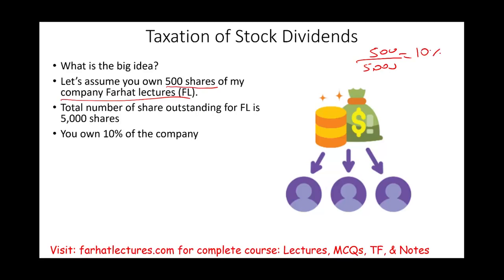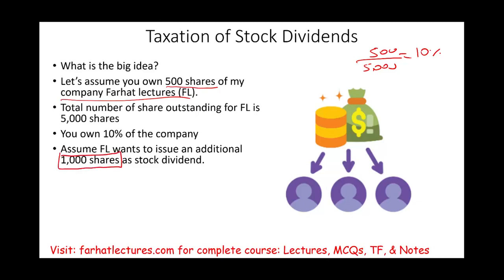As the owner of the company, I decided to issue an additional 1,000 shares in the form of a stock dividend. This means I want to reward my shareholders — you're one of them, a 10% owner. I'm going to issue new shares to reward you. I don't want to give you cash; I need to preserve the cash for the business. Therefore, I'm going to give you more shares of the company.